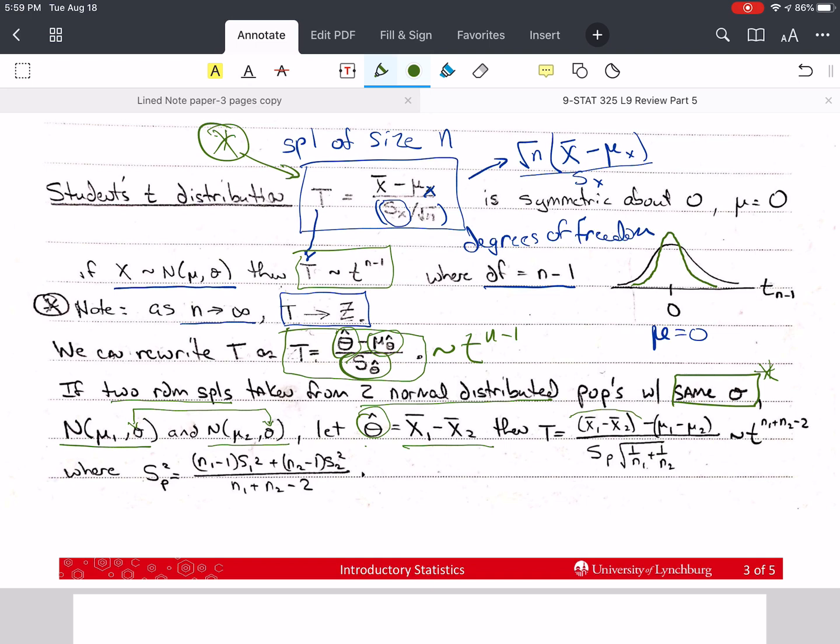Now, we can define theta hat as x bar 1 minus x bar 2. Could you do x bar 2 minus x bar 1? Absolutely. It's really just which one you name x bar 1 and which one you name x bar 2. You just have to be consistent. So, then we can use that as our theta hat, and then the mu hat of that will be mu 1 minus mu 2.